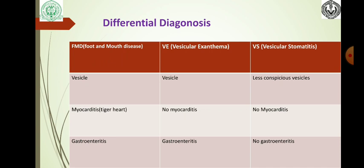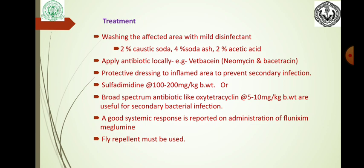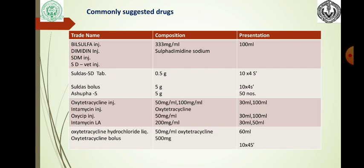Treatment: Since it is a viral disease, there is no specific treatment. Symptomatic and systemic treatment are available. For treatment, wash the affected area with mild disinfectant — 2% caustic soda, 4% soda ash, or 0.2% acetic acid. Apply antibiotics locally. Broad spectrum antibiotics like oxytetracycline 5–10 mg per kg are useful for secondary bacterial infection. A good systemic response is reported on administration of flunixin meglumine. Fly repellent must be used.